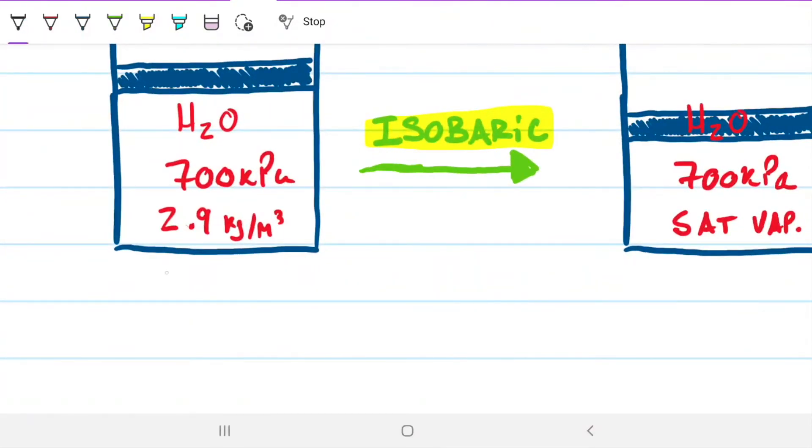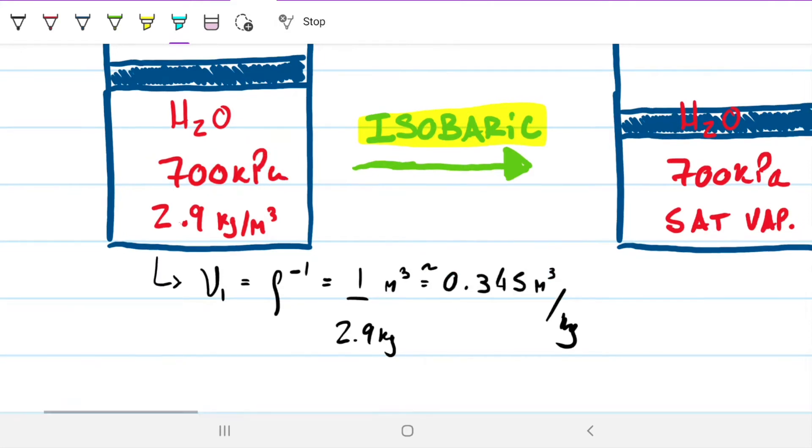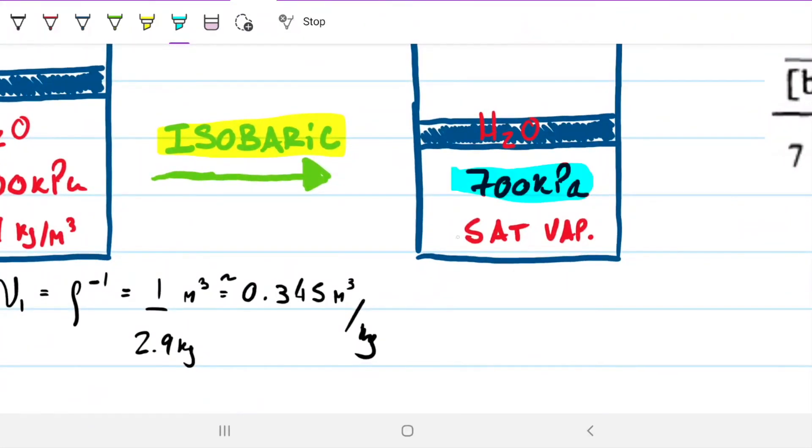If we transform this information into the specific volume for state one, we just do 1 over 2.9 kilograms per meter cubed, which is approximately 0.345 meters cubed per kilogram. With that piece of information, now we have two thermodynamic properties for the first state, and that is completely defined. The second state, we know two things as well: the pressure and it's a saturated vapor.